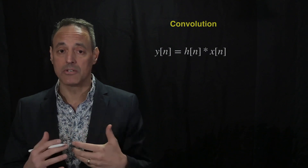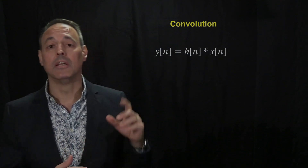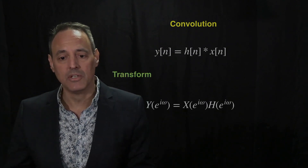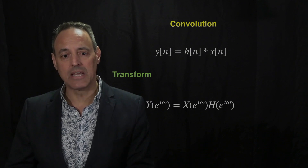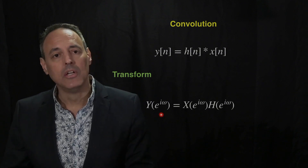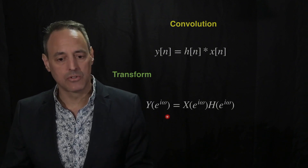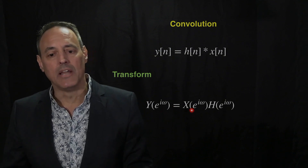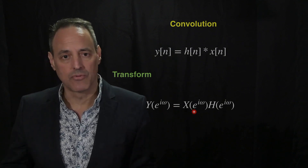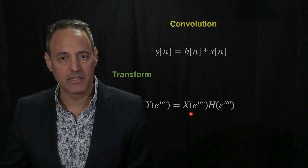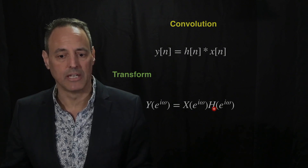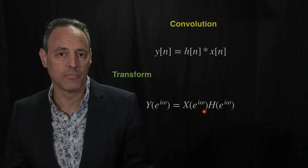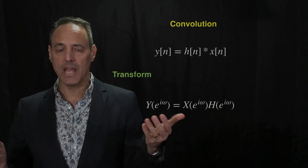This is a very simple and elegant, computationally efficient technique, and it works just as well here. If we do the transformation, you get exactly the same thing: you look at the Fourier transform of the discrete signal y, and then multiply the Fourier transform of x with the Fourier transform of h.